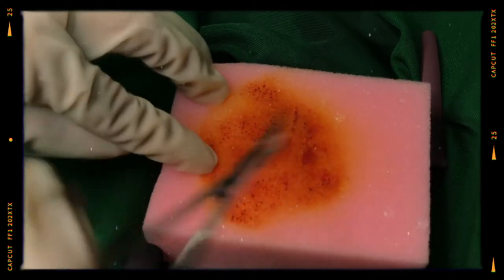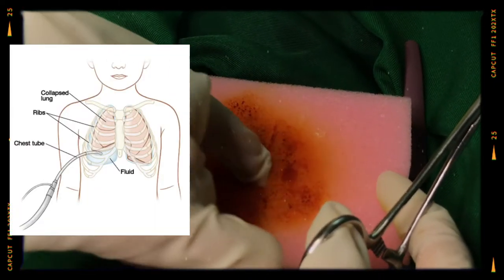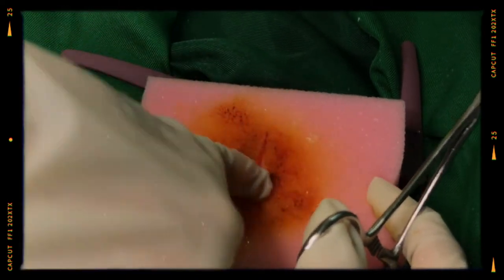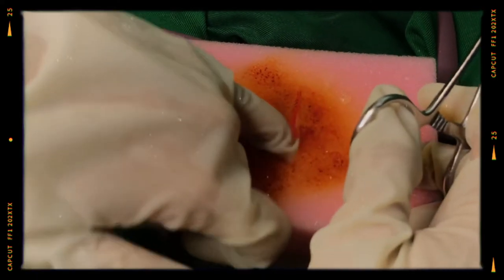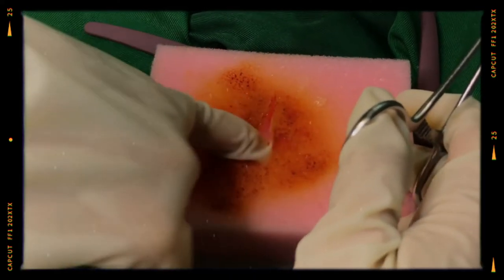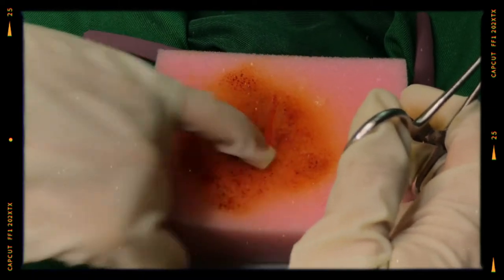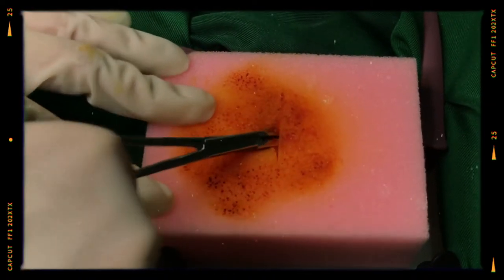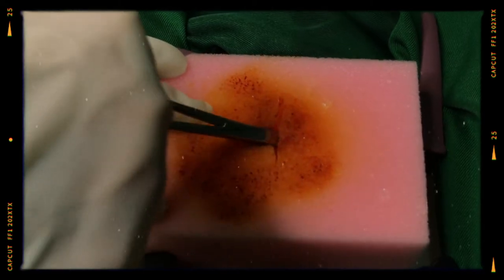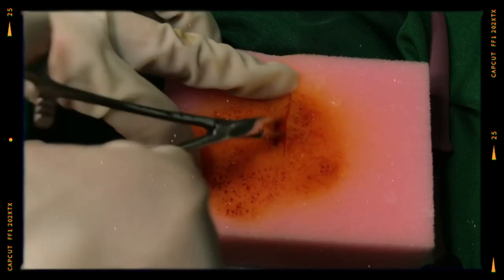This track should be directed posteriorly, cephalad and medially so that the tube lies posteriorly in the paravertebral gutter. Continue developing this track all the way into the pleura. Remove the scissors or clamp and explore the track with a gloved finger from time to time to make sure that the track is going in the right direction.